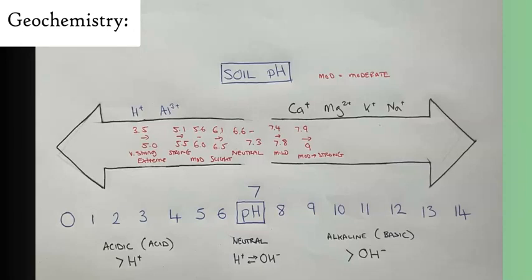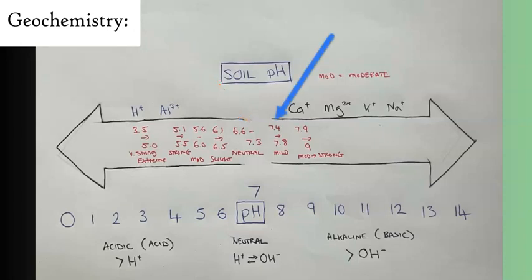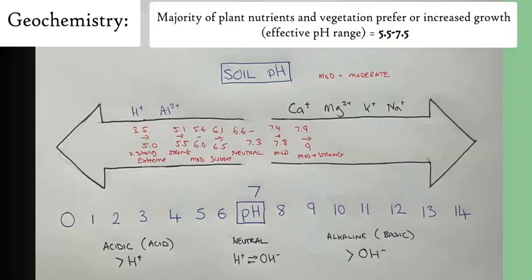The soil pH scale goes from 3.5, which is very strong acid, up to 9, which is very strong alkali. The ranges are: 3.5–5 very strong acid, 5.1–5.5 strong acid, 5.6–6.0 moderate, 6.1–6.5 slightly acidic, 6.6–7.3 neutral, 7.4–7.8 mild alkaline, and 7.9–9 moderate to strong alkaline. Most plants and nutrients prefer a slightly acidic to neutral pH. A fun fact: CO2 in the atmosphere creates rain that is slightly acidic, generally between 5.5 and 6.5 on the pH scale.